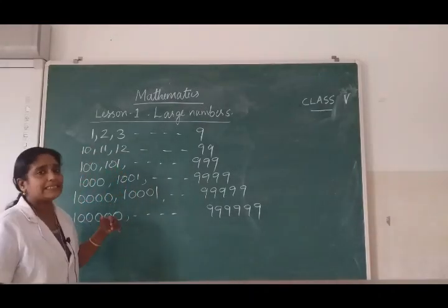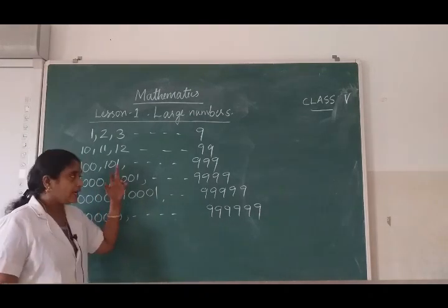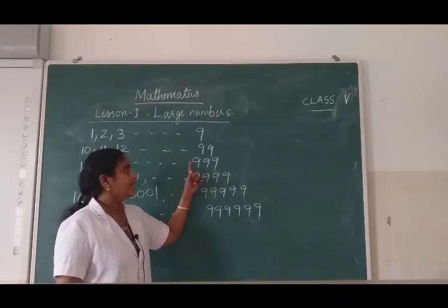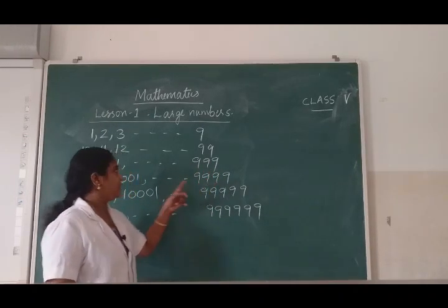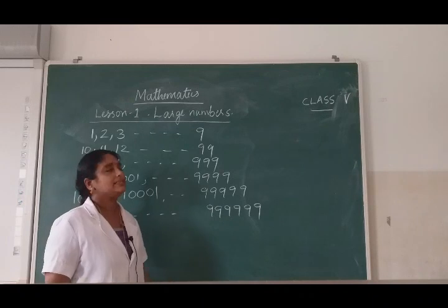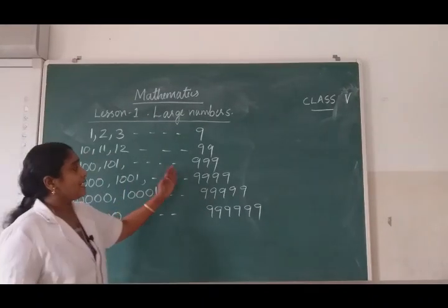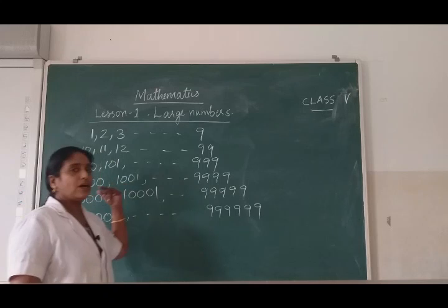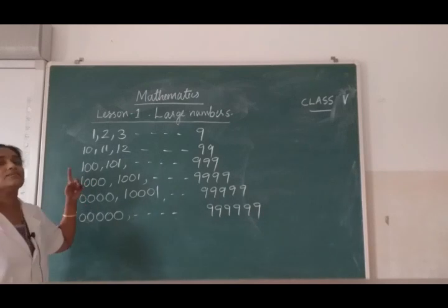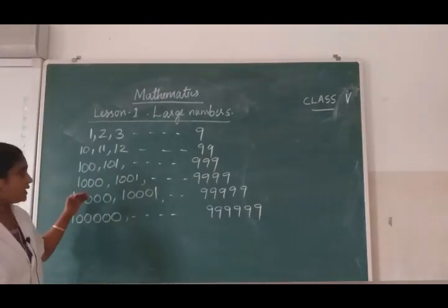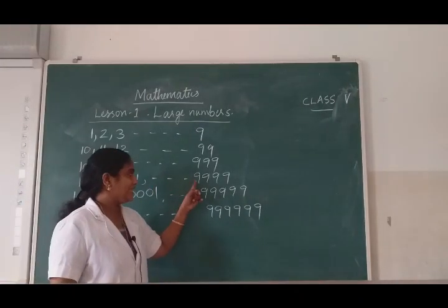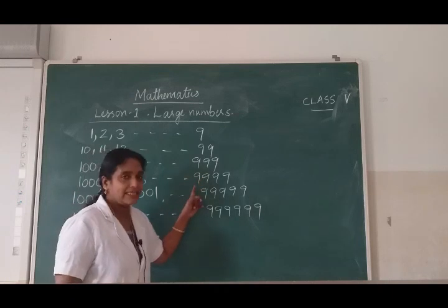When you continue the 3 digit numbers — 100, 101, 102 — we can write like that up to 999. 999 is the greatest 3 digit number and 100 is the smallest 3 digit number. After 999 the number we get is 1000. 1000 has 4 digits, so 1000 is the smallest 4 digit number. 1000, 1001 etc. are 4 digit numbers. The greatest 4 digit number is 9999.